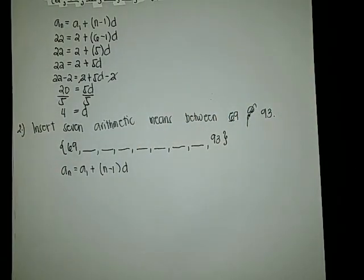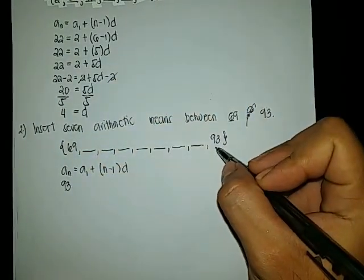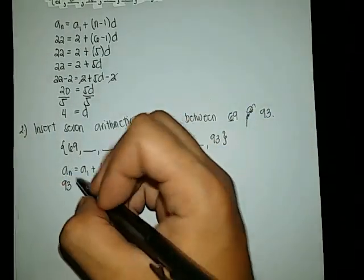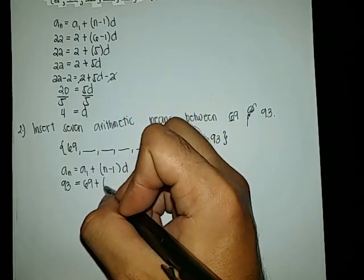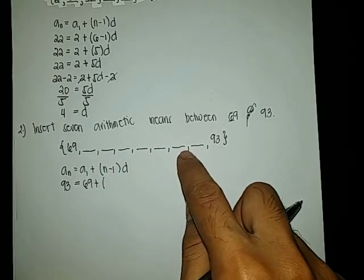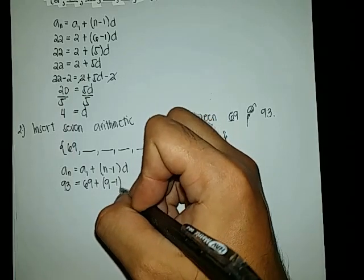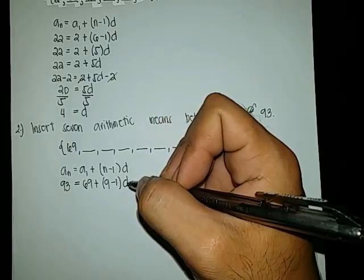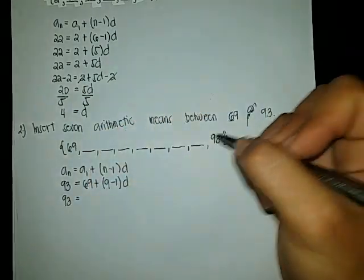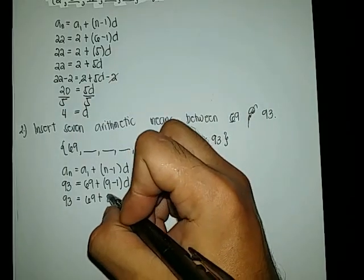Our last term a sub n is 93, and our first term a sub 1 is 69. Counting the terms — 1, 2, 3, 4, 5, 6, 7, 8, 9 — we have 9 terms. So: 93 equals 69 plus 9 minus 1 times d. Simplifying, 9 minus 1 is 8, so 93 equals 69 plus 8d.